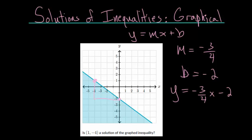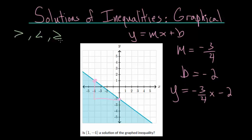Like if you plug in negative 4, these cancel, and the negative cancels — you get 3 minus 2, which is positive 1. So, this is the equation of that solid line. But the inequality is slightly different, because with an inequality it's no longer going to be an equal sign. It's going to be either greater than, less than, greater than or equal to, or less than or equal to.